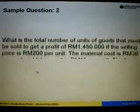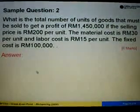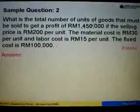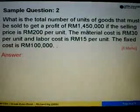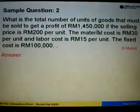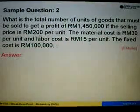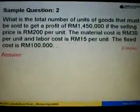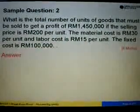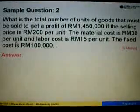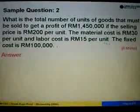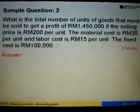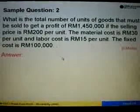Next, let's look at sample question 2. What is the total number of units of goods that must be sold in order to get a profit of RM1,450,000? The selling price is RM200 per unit, the material cost is RM30 per unit, the labor cost is RM15 per unit, and the fixed cost is RM100,000.